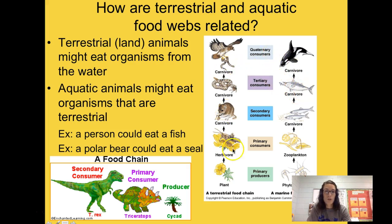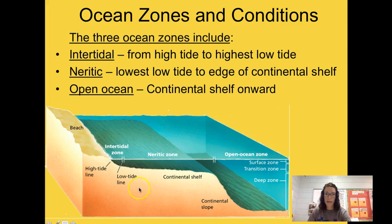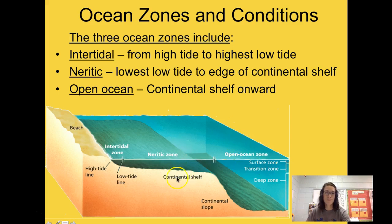Make sure you have all of that noted. At the bottom of page 7, you need to write in the different zones: intertidal zone, neuritic zone, and the open ocean zone — which is made up of three zones. Write those in before you close out the video. In the next couple of notes, you'll find out what kinds of organisms live in these different zones. Have a good day!